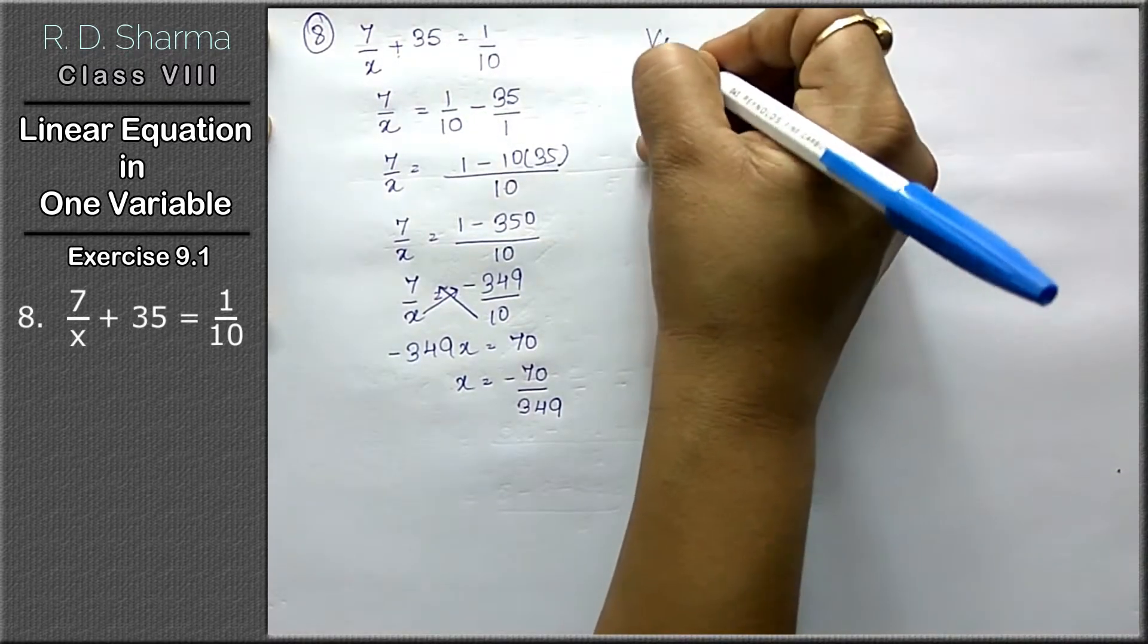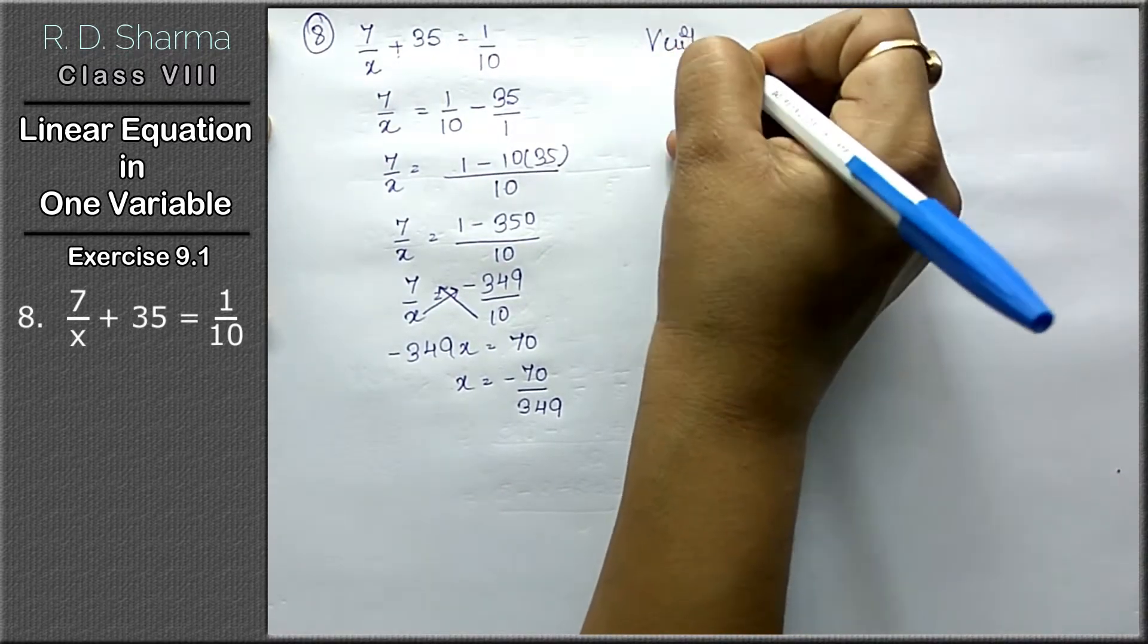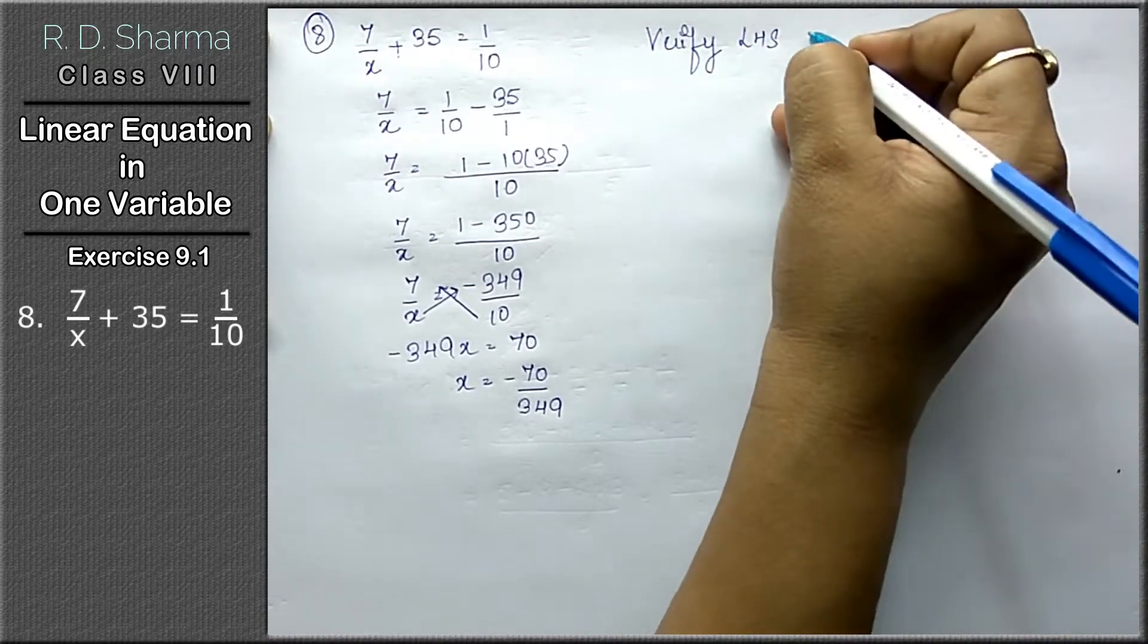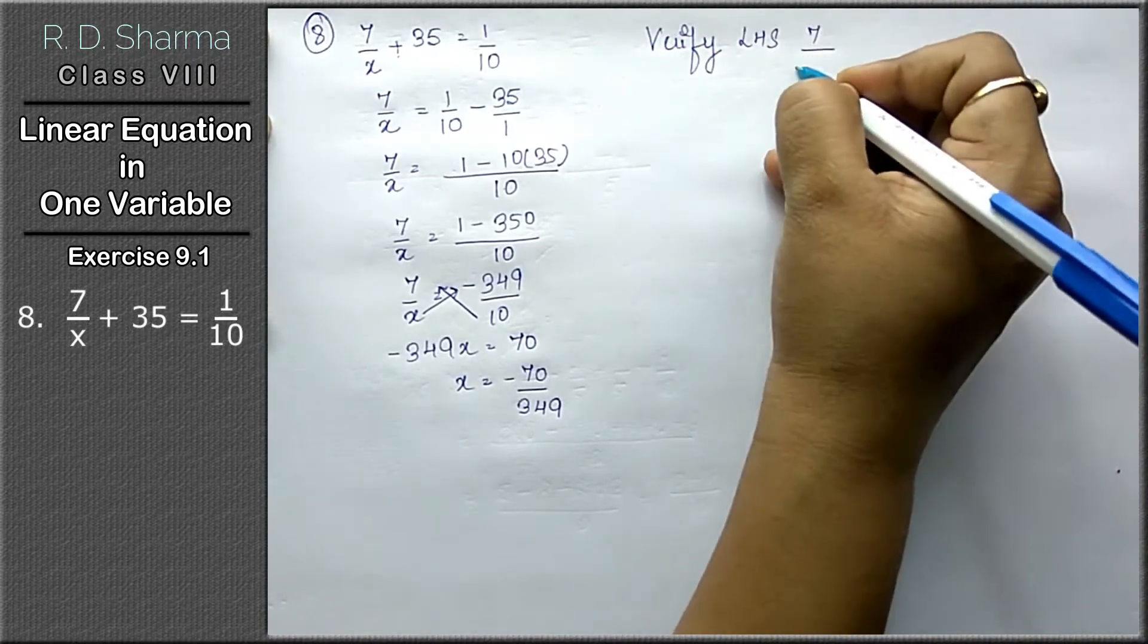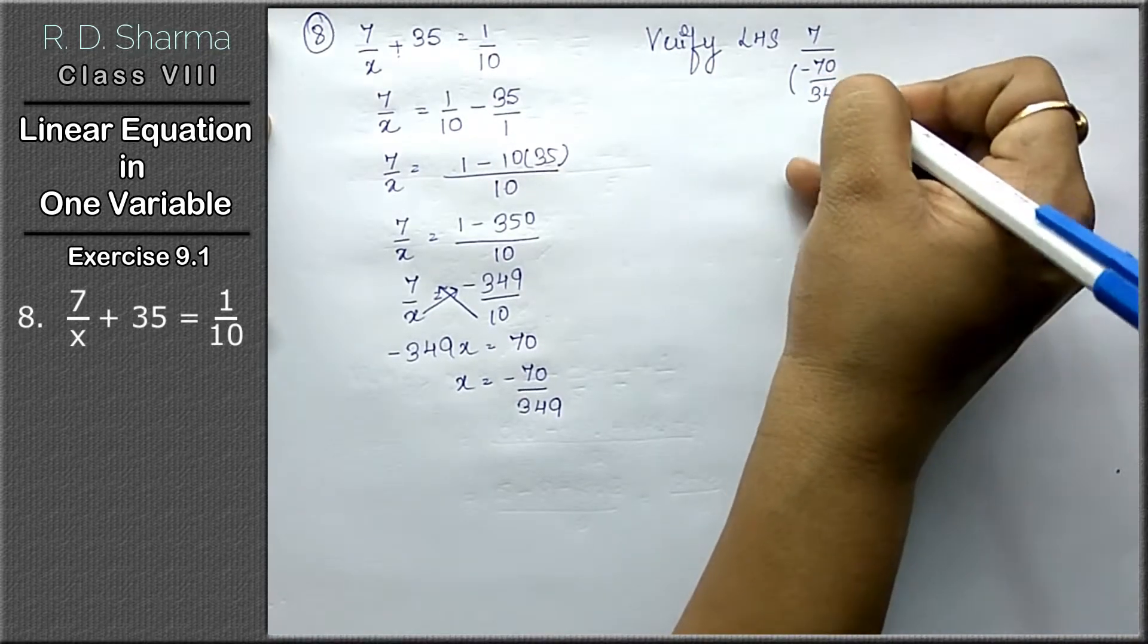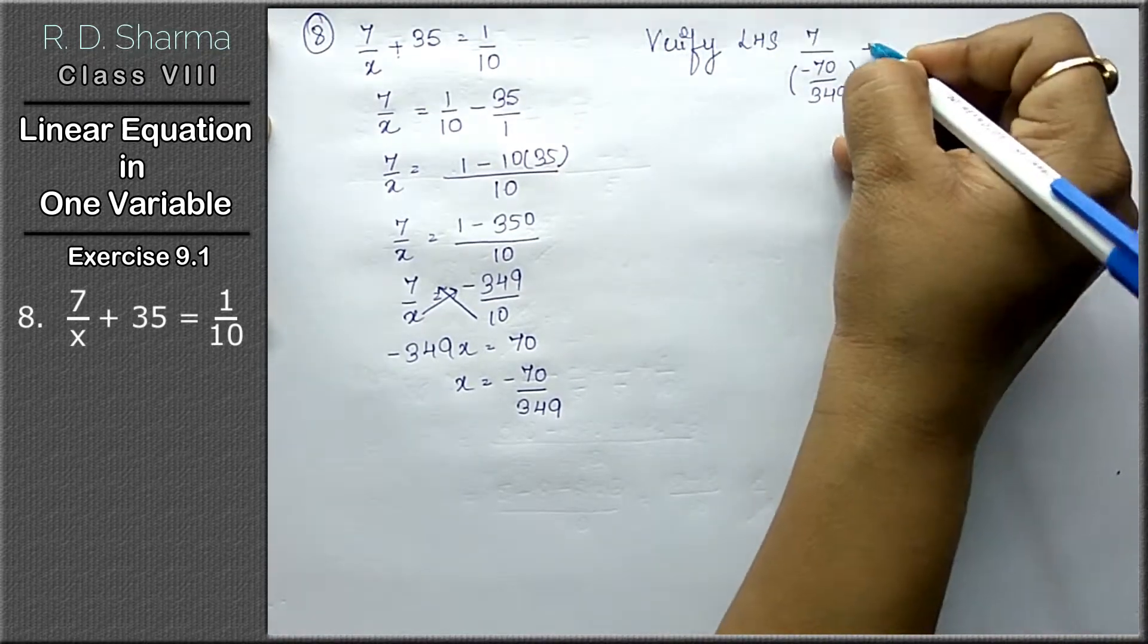Now we will verify our solution whether our left hand side is equals to right hand side or not. Left hand side mein 7 upon minus 70 upon 349 de rakha hai, plus 35.